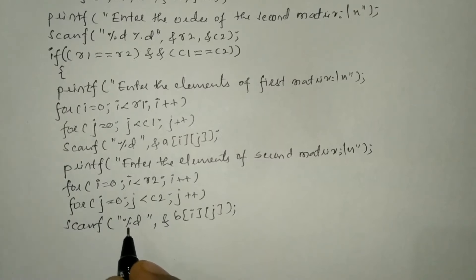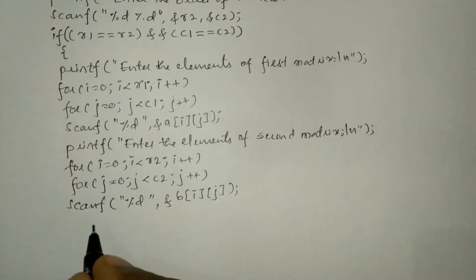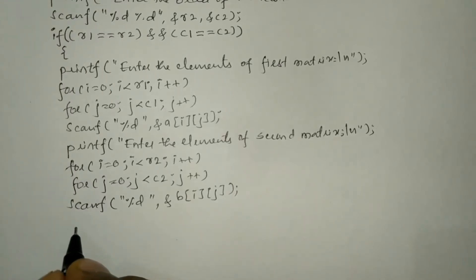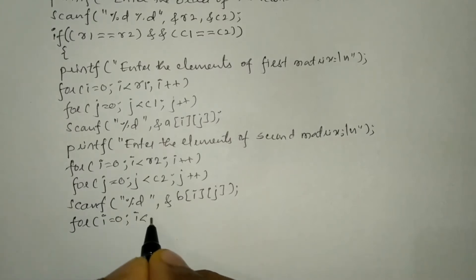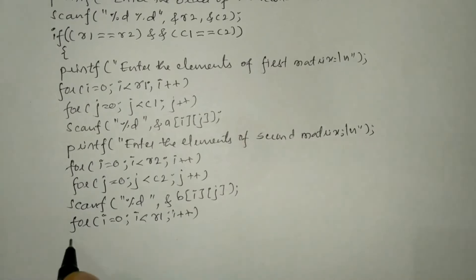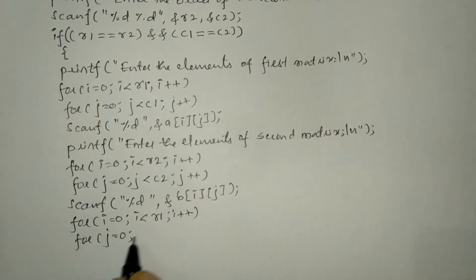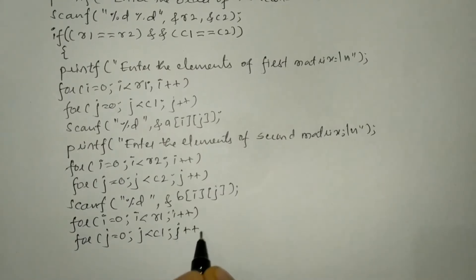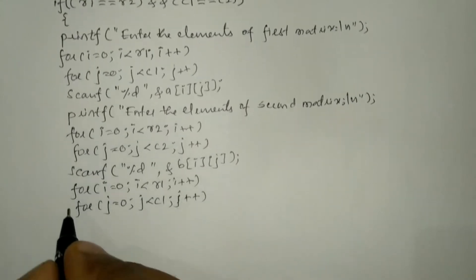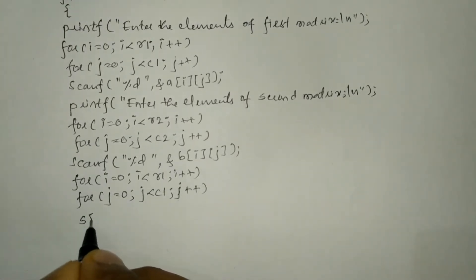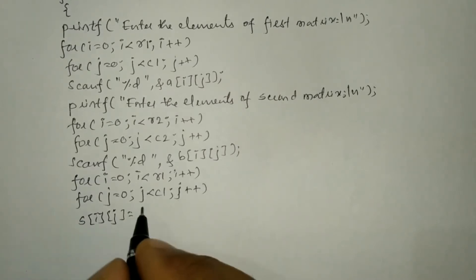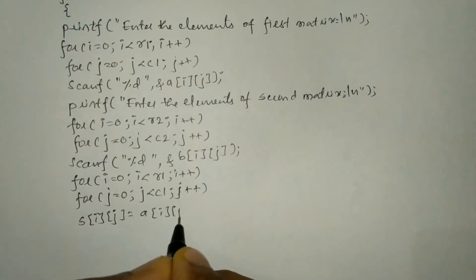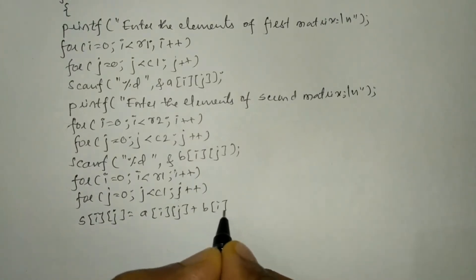After receiving both matrices, we perform the addition. I write another nested for loop: for i equals zero, i less than R1, i plus plus; inner loop for j equals zero, j less than C1, j plus plus. Inside we write S[i][j] = A[i][j] + B[i][j] and put semicolon.